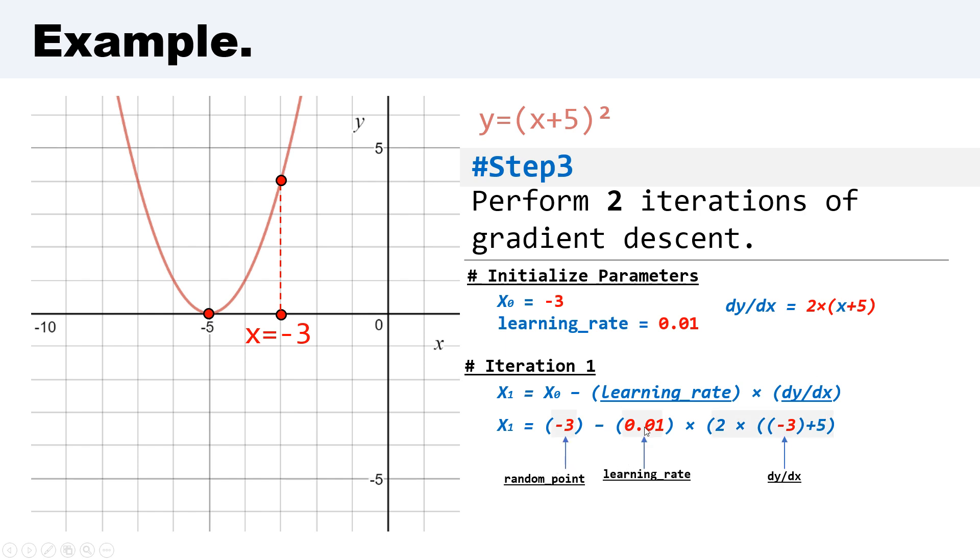This is the random point, this is the learning rate, and this is the derivative or gradient of the function. We have a result of -3.04.